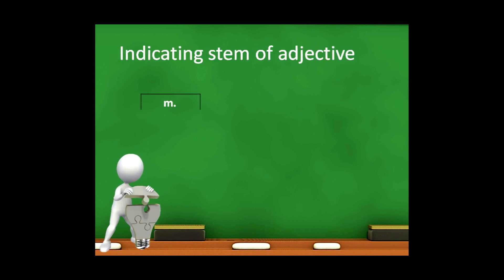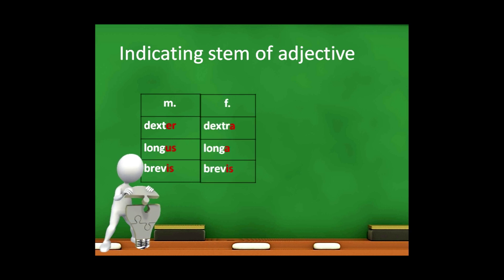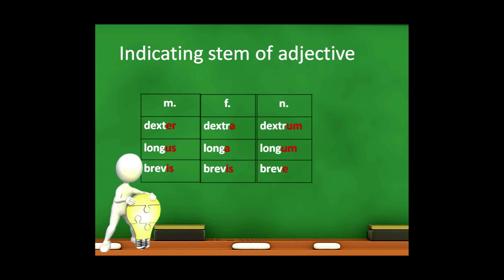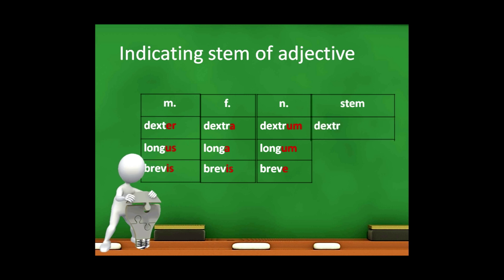Let's practice. We take the adjectives dexter, longus, and brevis, then construct the feminine and neuter forms. Dexter, dextra, dextrum; longus, longa, longum; brevis, brevis, breve. After removing the gender endings, colored in red, we get the stems: dexter-, long-, and brevis-.